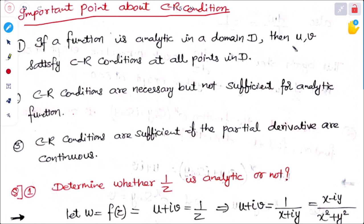That means u and v will satisfy the CR condition at all points in the domain. CR conditions are necessary but not sufficient for an analytic function. It means they are necessary for an analytic function, but it is not sufficient — that is, if the condition is given, the function may or may not be analytic.